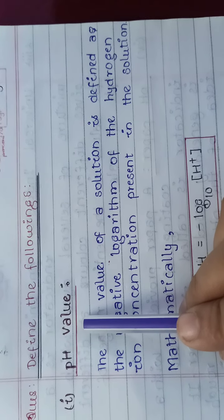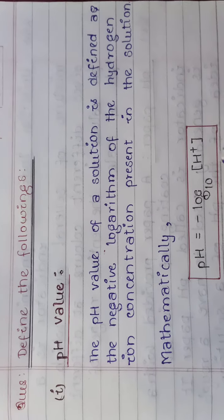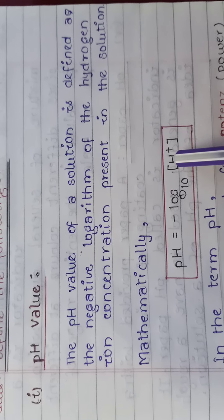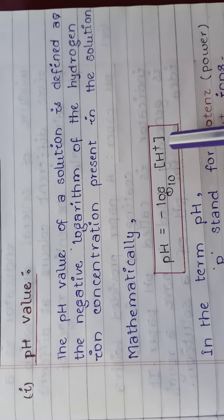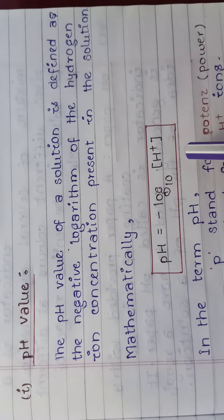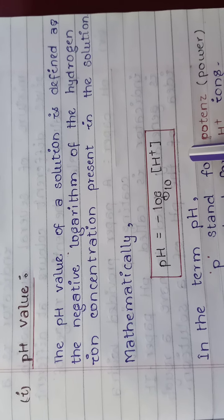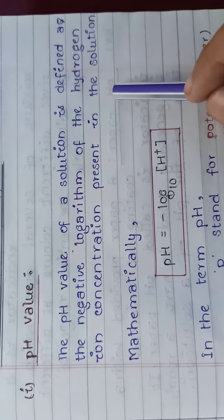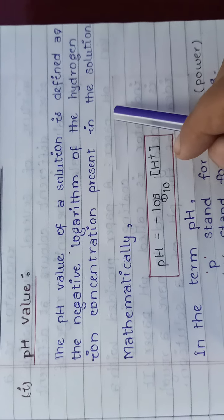We have already seen that the strength of an acid depends upon the concentration of H⁺ ion, hydrogen ion or hydronium ion H₃O⁺, which is present in its aqueous solution. Whereas the strength of a base depends upon the concentration of hydroxide ion, OH⁻, which is present in its aqueous solution.